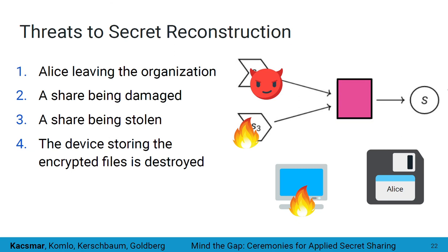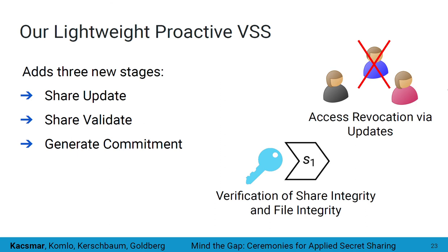After looking at our case studies such as Sunder, we found some threats to secret reconstruction to be repeated. A practitioner could leave the organization and take their share; a share could be damaged or stolen; or the device storing the encrypted files could be destroyed. We therefore propose a ceremony incorporating our lightweight proactive verifiable secret sharing scheme, which adds three new stages. Share update allows revocation of access to participants and a way to modify shares when compromise is suspected, so compromised shares cannot be used with new shares. Share validate provides a way to validate the integrity of shares. Generate commitment provides a way to validate the integrity of the secret files to mitigate risks of covert file modification.